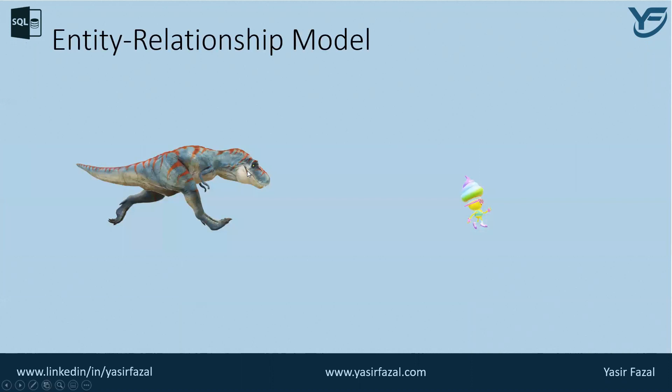Before explaining the diagram, I need to elaborate something. The Entity Relationship model is actually based on a notion of real-world entities and relationships among them. While formulating a real-world scenario into the database model, the ER model basically creates entity sets, relationship sets, general attributes, and various constraints.